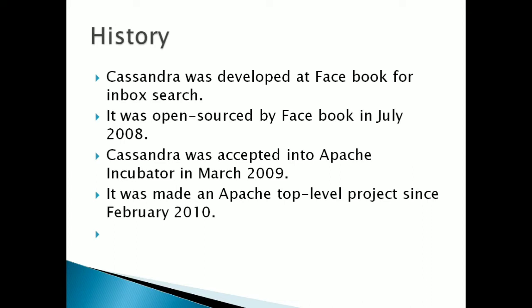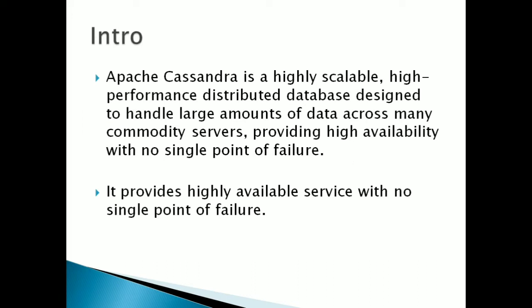Cassandra is a highly scalable and distributed database which handles a large amount of data. Since it is used in big data, it provides commodity server architecture, the same as Hadoop. It also provides high availability with no single point of failure, meaning it has a fault tolerance capacity.